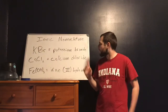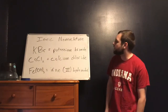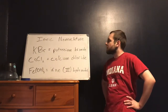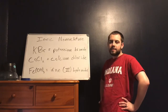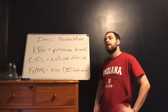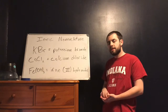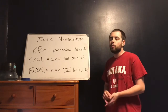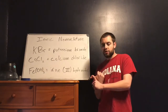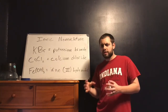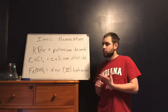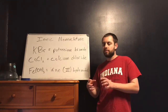Okay, so ionic nomenclature. Remember that nomenclature is a system of naming. And this system of naming needs to be specific enough that we can tell the composition — what it's composed of, what it's made of — and the structure, how it's put together.